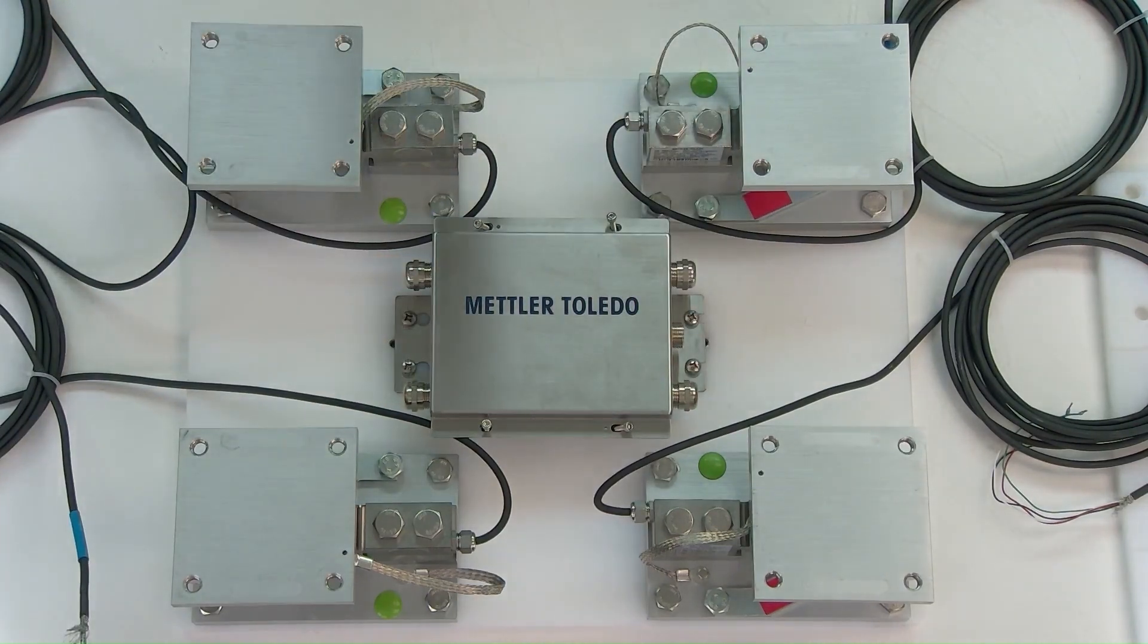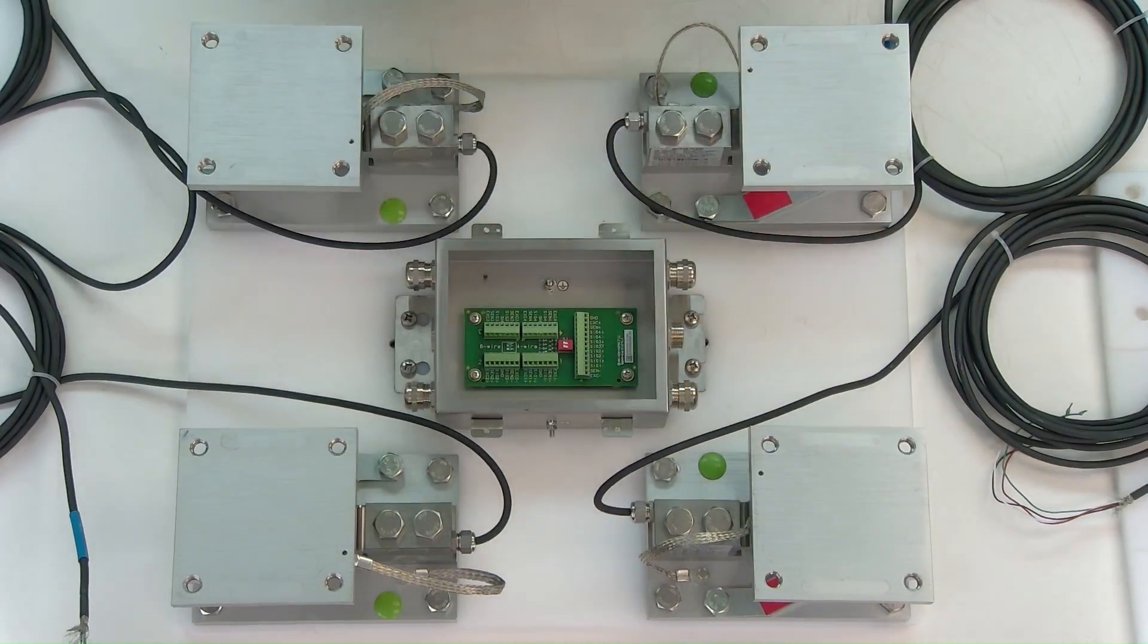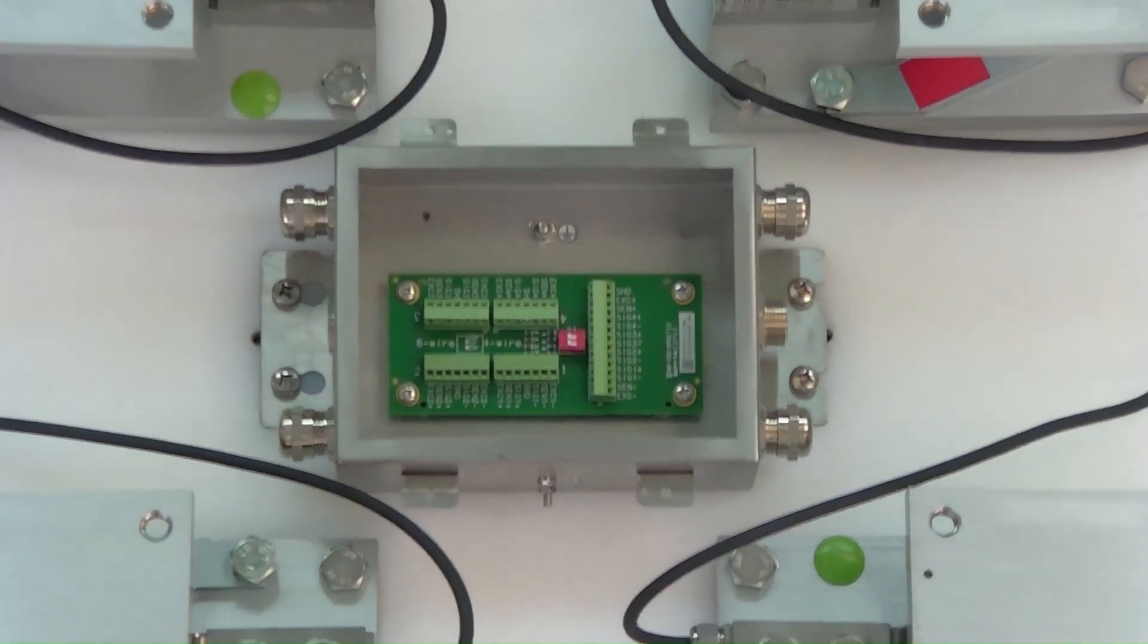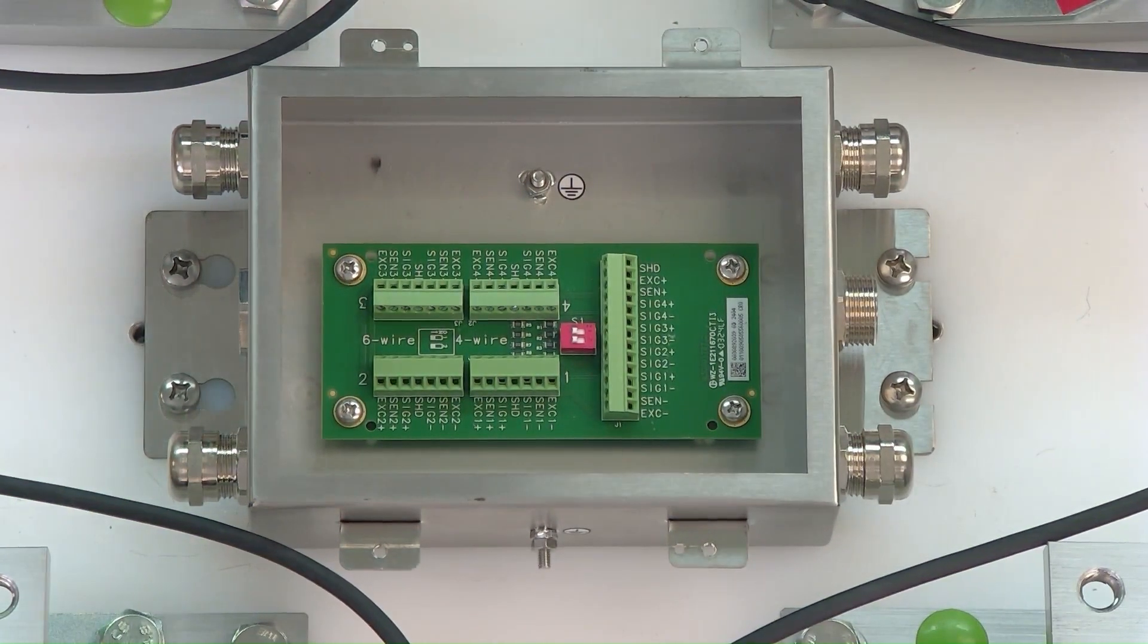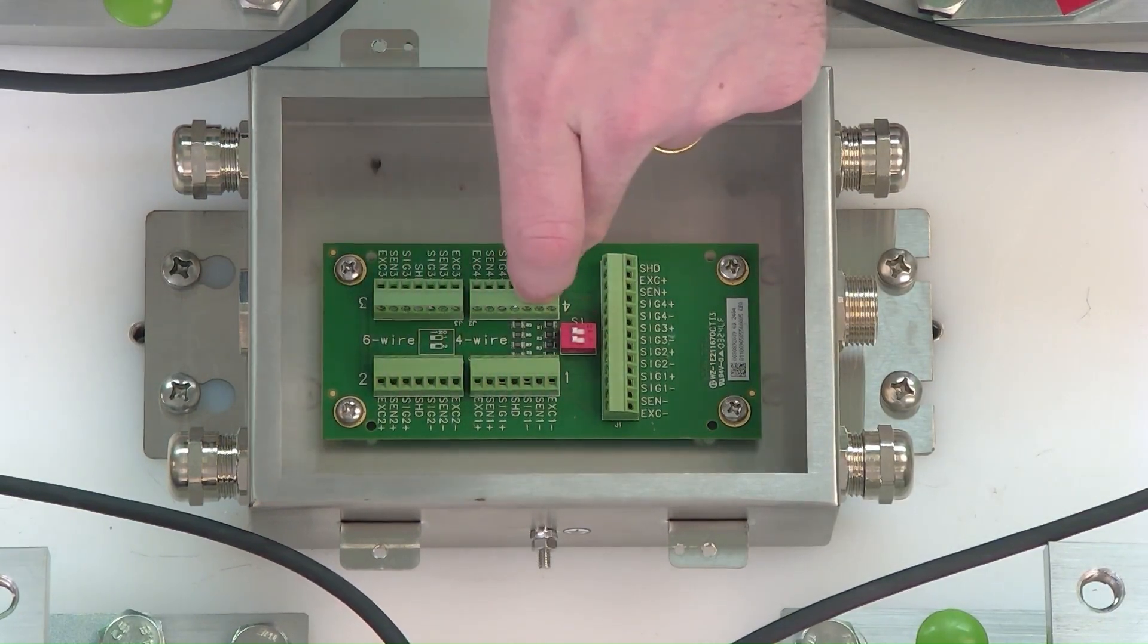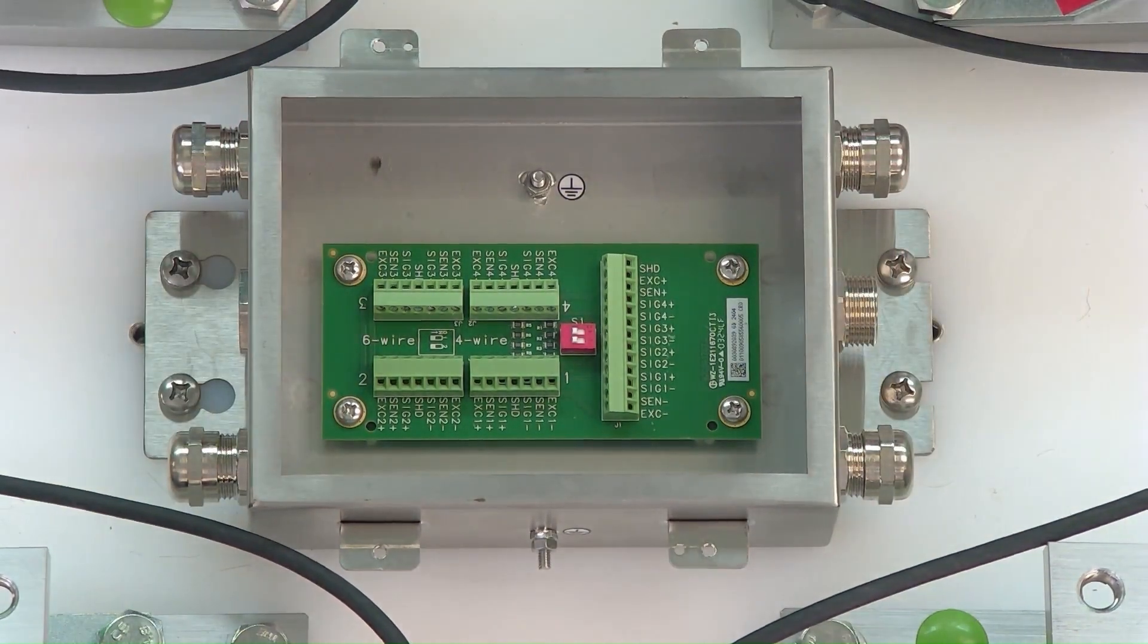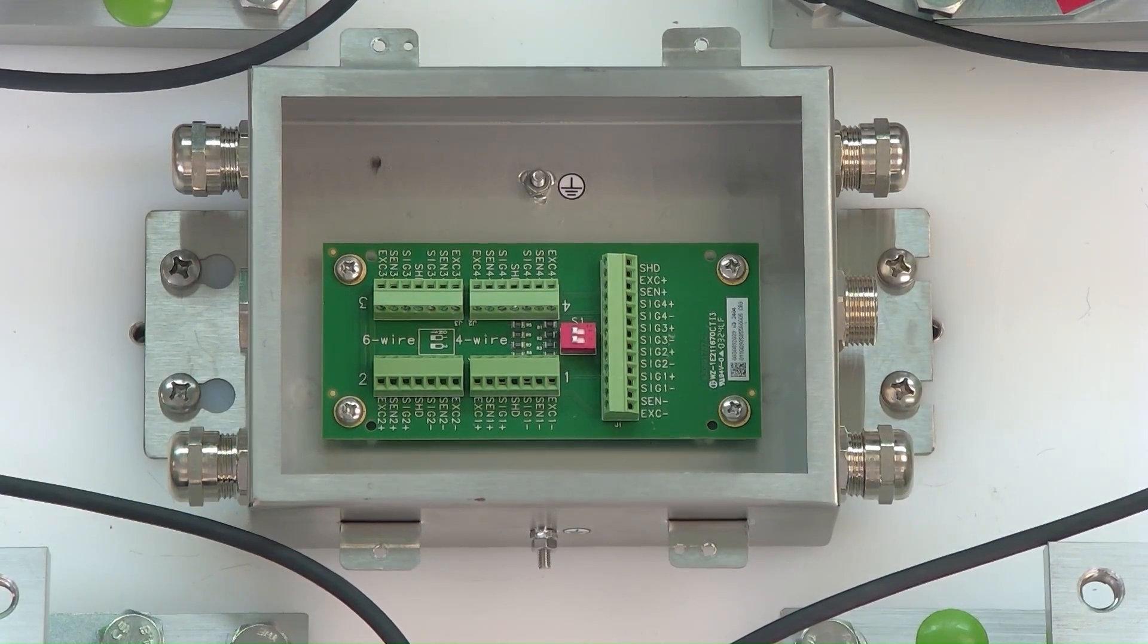With our junction box now secured, we're going to remove the lid and zoom in inside. We can see the different channels labeled: channel 1, 2, 3, and 4. These match the same numbers on the outside of the junction box, so you can easily know where to pass those cables through if you want them on a specific channel.